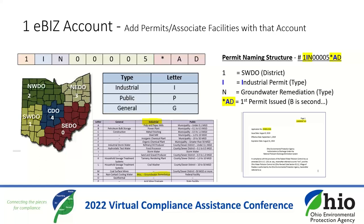On a side note, when you get your permit, look at the expiration date. Applications to renew these permits are due six months before that date. Don't wait until the last minute to start the application — they do take time.